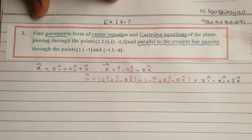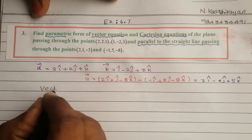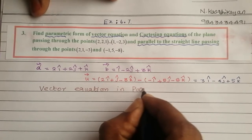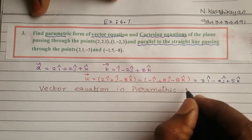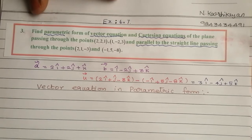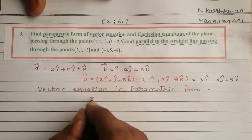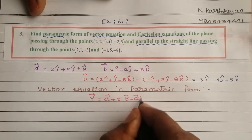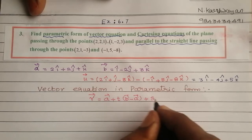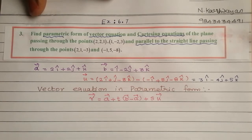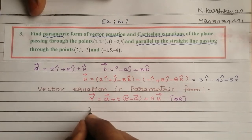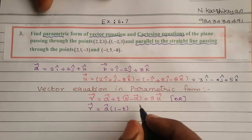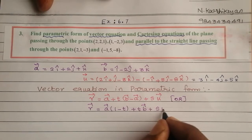Parametric form of the vector equation. The formula is: r vector equal to a vector plus t into (b vector minus a vector) plus s into u vector.